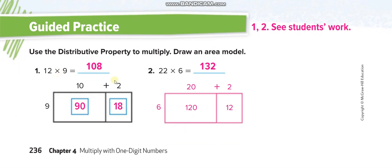Now we are drawing an area model. This is the way of showing how we break 12 into two parts: 10 and 2. We give the greater part to 10 and the smaller part to 2. The number we're multiplying by is 9, so we write 9 here. The two boxes inside are for the answers: 9 times 10 equals 90, and 9 times 2 equals 18. At the end we add our answers: 90 plus 18 equals 108.